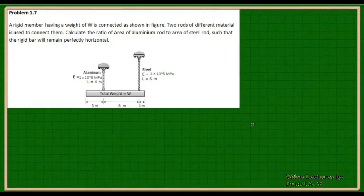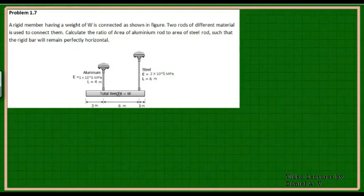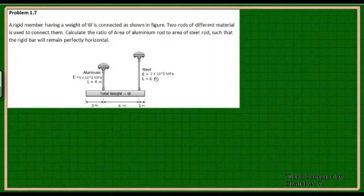The problem: we have a rigid member with a weight W connected as shown in the figure. Rigid members won't undergo bending — they deform as a straight line. Two rods of different materials are used to connect them: one made of aluminium and one made of steel. Their modulus of elasticity, length, and everything else is given in the problem.